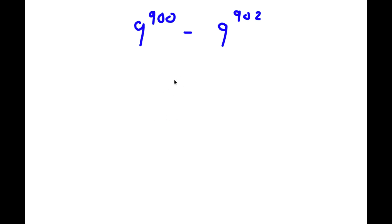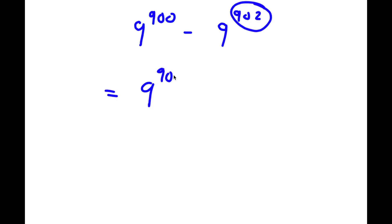In this problem, I have 9 to the power of 900 minus 9 to the power of 902. To solve this, I'm going to first rewrite 902 as 900 plus 2. So now I have 9 to the power of 900 minus 9 to the power of 900 plus 2.